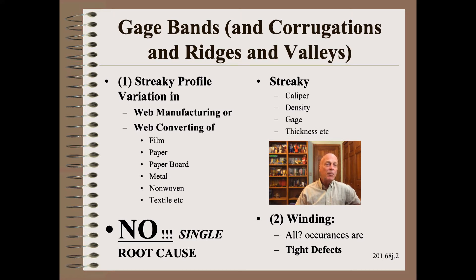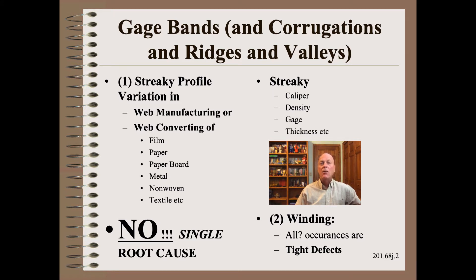By streaky profile, we mean a variation of caliber, density, gauge, and/or thickness across the width of the web. However, a streaky profile by itself will not cause a gauge band — you also need a wound roll to do that. So the first ingredient is streaky webs, and the second ingredient is winding.